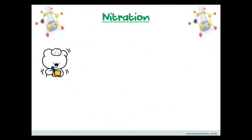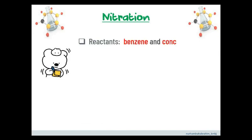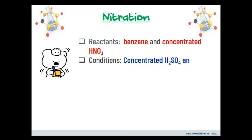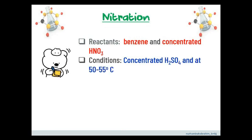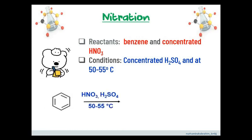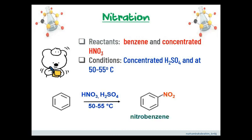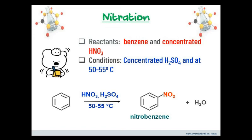The next reaction of benzene is nitration. The reactant needed is concentrated nitric acid, under conditions of concentrated sulfuric acid and at a temperature between 50 to 55 degrees Celsius. For example, when benzene reacts with concentrated nitric acid in concentrated sulfuric acid at 50 to 55 degrees Celsius, the product formed is nitrobenzene, where one hydrogen from benzene is substituted with a nitro group from nitric acid, with water as a by-product.